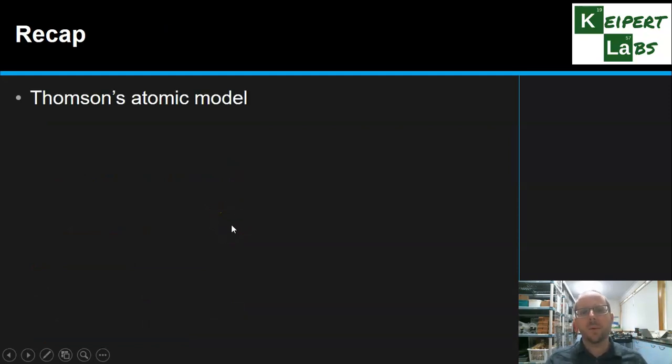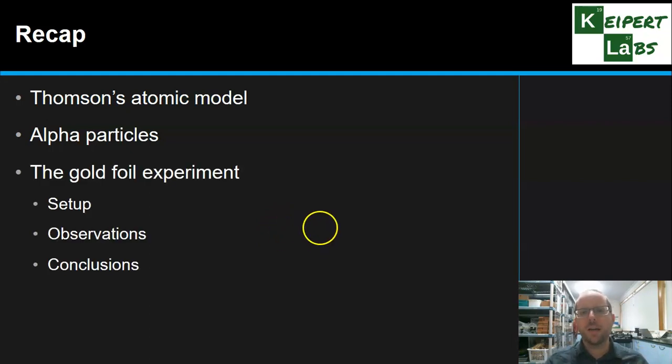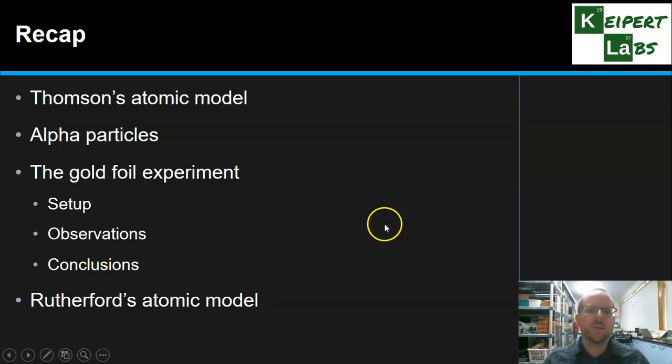We looked at Thompson's atomic model, the plum pudding slash choc chip cookie model. We saw that by the discovery and use of alpha particles, Rutherford and his team were able to discover something new about the structure of the atom. They used the gold foil experiment where they fired alpha particles at gold foil, made some curious observations, and drew some drastic, significant, momentous conclusions. Those conclusions led us to a totally new atomic model to really further the understanding of science. Thanks very much for watching. Don't forget to like and subscribe. Bye for now.